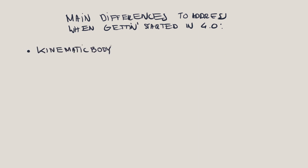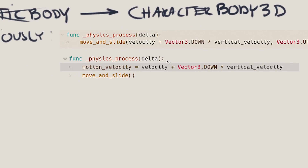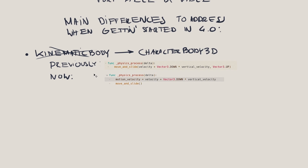The first thing you'll notice is that there's no KinematicBody node anymore. There's a CharacterBody3D instead, and it has a property called motion_velocity. You have to use your direction and speed as the value for this property. Previously you would pass your direction vector multiplied by speed as parameters into move_and_slide. In Godot 4, move_and_slide doesn't take parameters — you just call it in your physics process and it will use whatever value you put into the motion_velocity property.